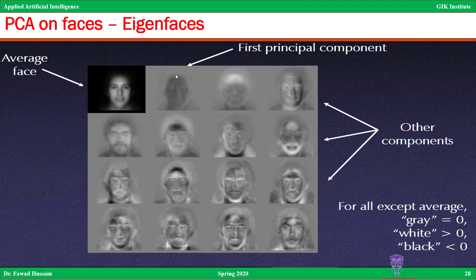Here is an example application of PCA. You can see the average face of a person. Using just the first principal component, you can find the outline of that person. Adding the second, third, fourth, and further components progressively improves the reconstruction. Combining all components gives back the original data point. If you remove the lower components you lose some detail, but since those have the least variation, the information lost is minimal.